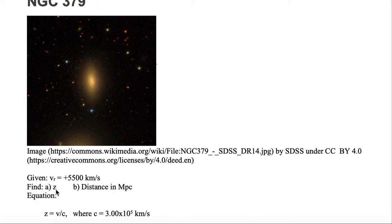We want to find A, its redshift parameter z, and B, its distance in units of megaparsecs.